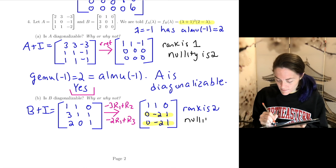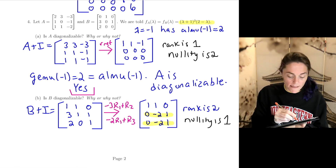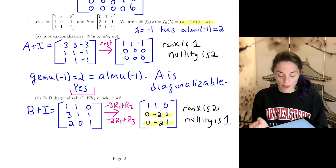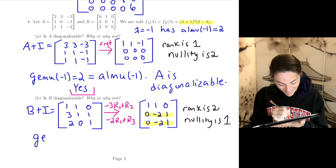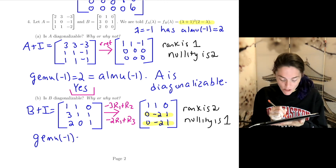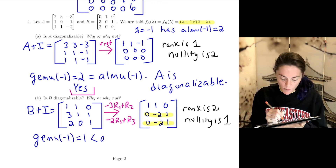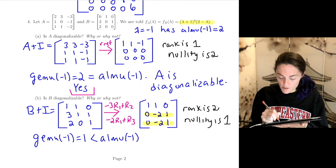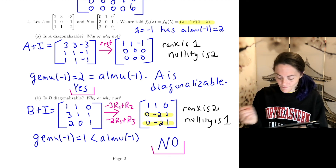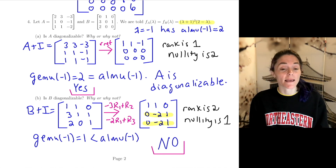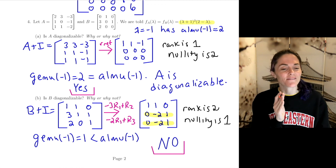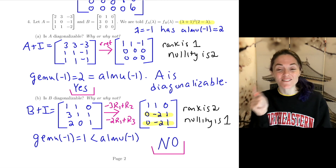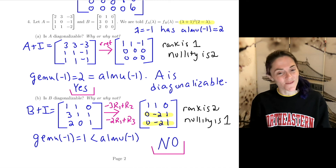The nullity is 1. The geometric multiplicity of minus 1 is just 1, which is strictly less than its algebraic multiplicity of 2. So the answer is no — B is not diagonalizable. We don't have enough linearly independent eigenvectors: one for eigenvalue minus 1, one for eigenvalue 2, giving only two total, which is not enough to diagonalize a 3 by 3 matrix.